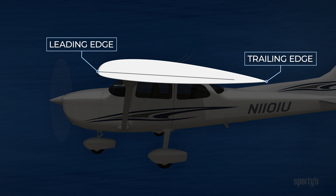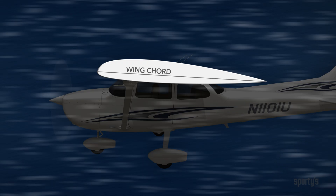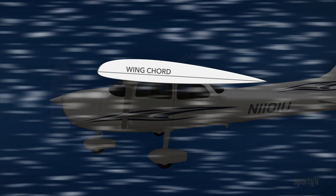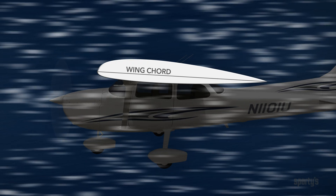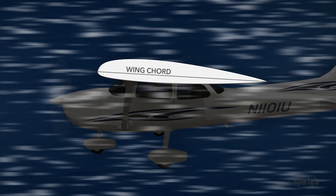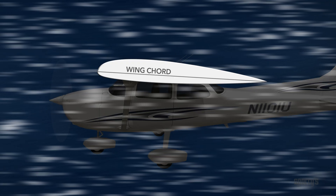In cross-section, an imaginary line drawn between the leading edge and the trailing edge is called the wing chord. Later, we'll see that the relationship between the wing chord and airflow is important when we control lift.